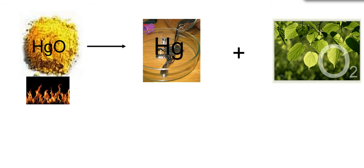But why do we balance chemical equations? Well, let's say I have some mercury oxide. And I heat it up. I would end up with mercury and oxygen gas.